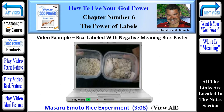Dr. Emoto's rice experiment is very simple to do. All you do is cook some rice or spaghetti as you normally would, then put it into two different containers. Rice and spaghetti were chosen because they absorb and contain a lot of water when cooked. The two containers are each labeled — one with negative words such as 'I hate you,' 'you fool,' or 'idiot.' The other container is labeled with words such as 'I love you,' 'blessed,' and especially 'thank you.' The containers are put up and left alone for a period of time. While the most dramatic differences are noticed after a couple of weeks, most people look at them every day to gauge their progress.